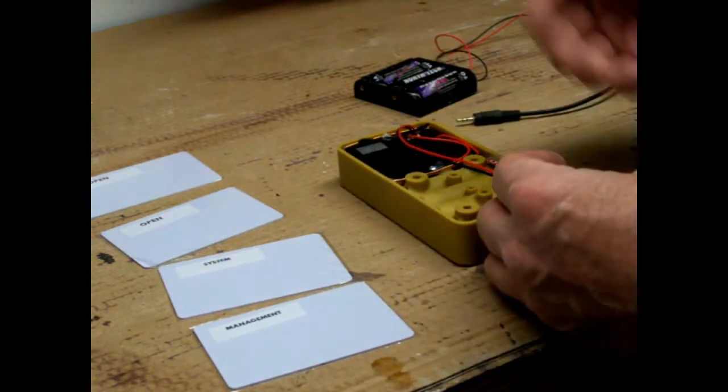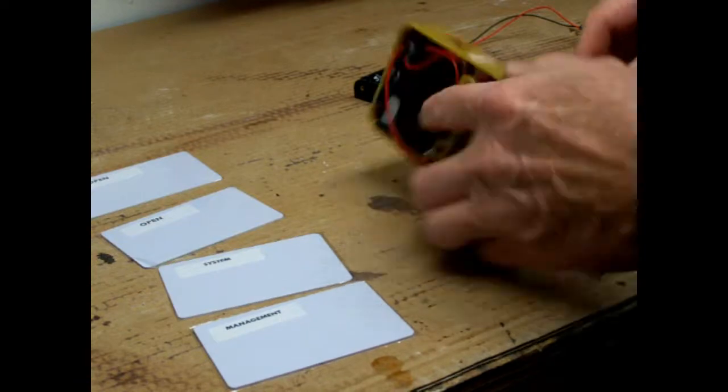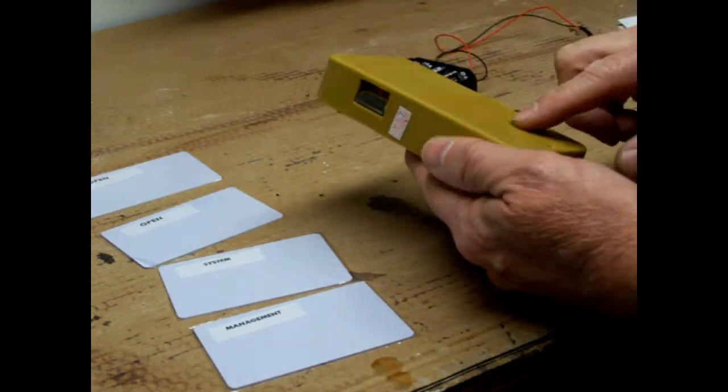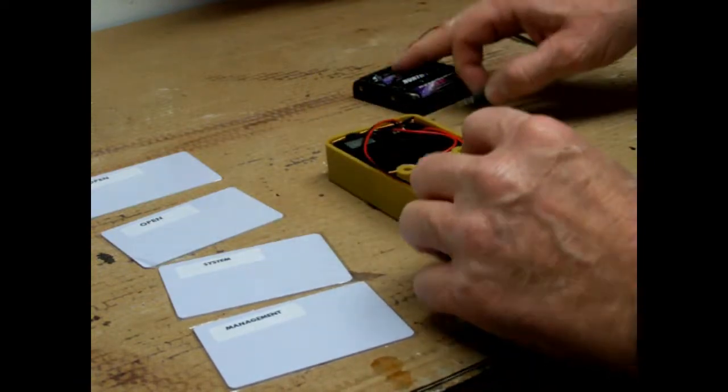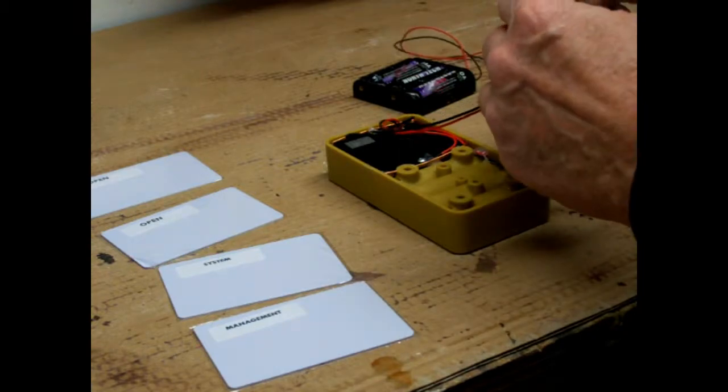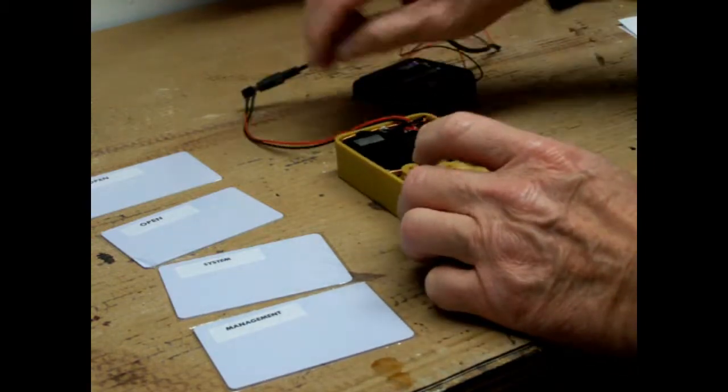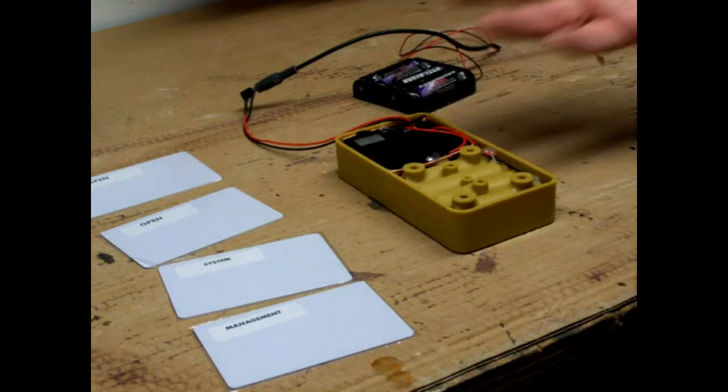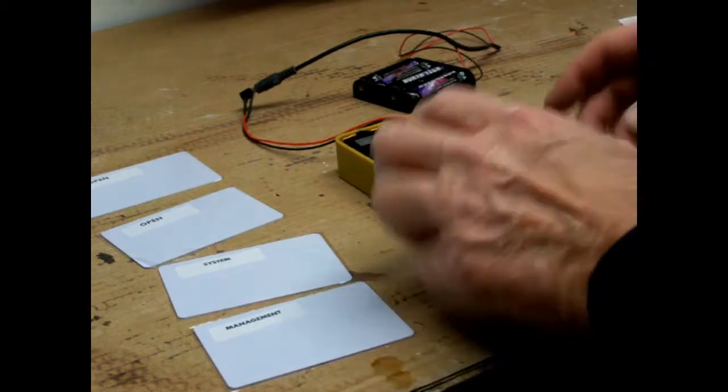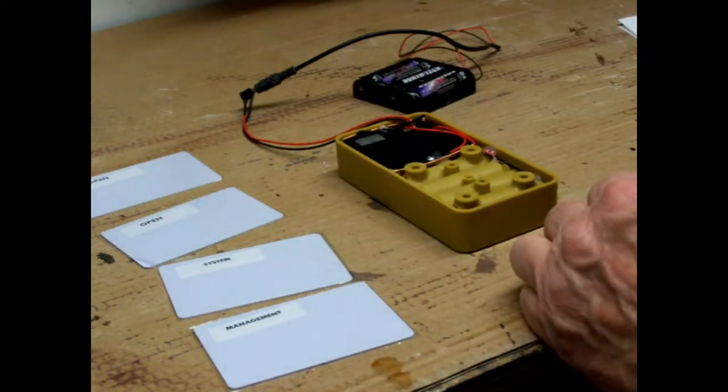So the first thing you want to do is attach power to it. You can either do that by putting batteries in the battery pack here or plugging in your external power source. When you do, you'll hear that little tune play that just lets you know that the lock is powered.